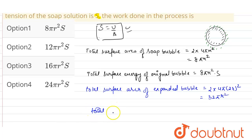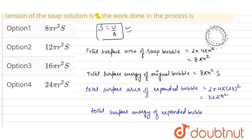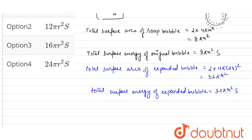The total surface energy of the expanded bubble will be surface area times surface tension, so it will be 32πr² × s.